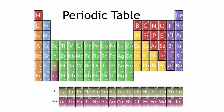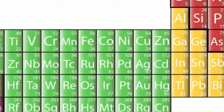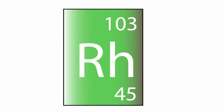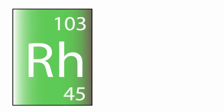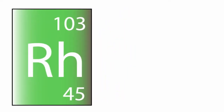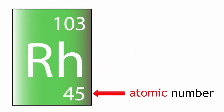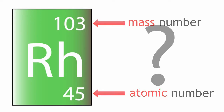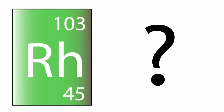When you look at the periodic table, you will see that each element has its own box. And within that box, you'll find two numbers: the atomic number, or proton number, and the mass number. But what do these numbers mean?